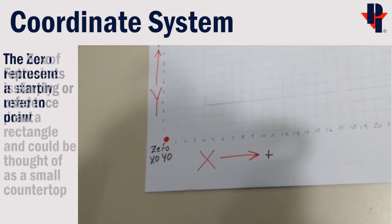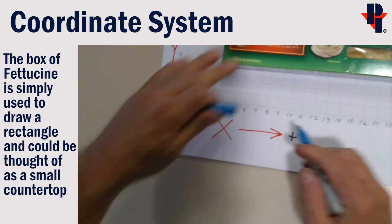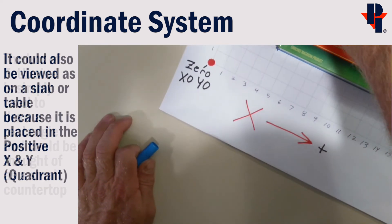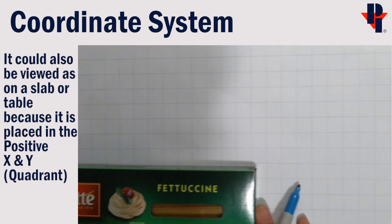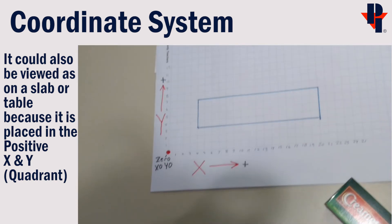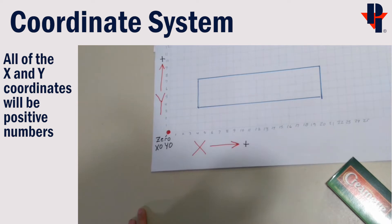I'm going to set this box of fettuccine somewhere within the x and y positive of my graph paper. I'll trace it out so we can identify the coordinates and then eventually turn it into a CAD or digital drawing. To do so, we'll need to identify the four corners as x and y coordinates.